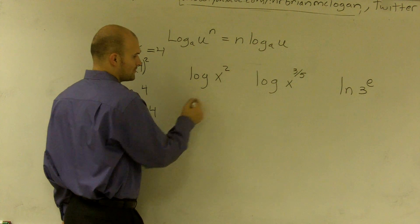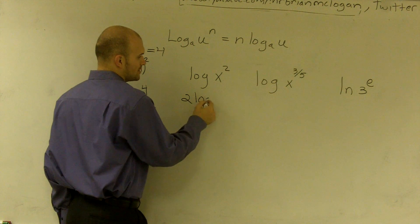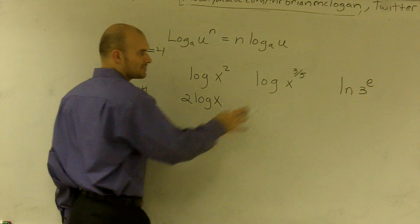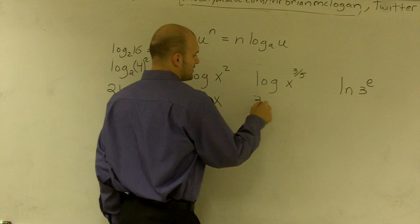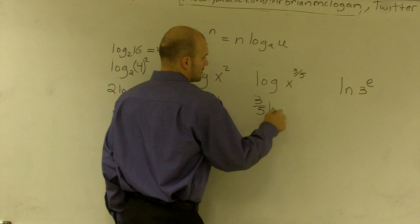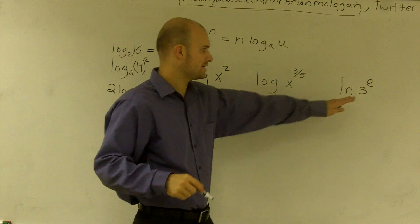If I have my exponent as 2, I can rewrite it as 2 log x. Here, even though it's a fraction, still write that fraction in front, 3 fifths log of x. And over here, I know my base is e.